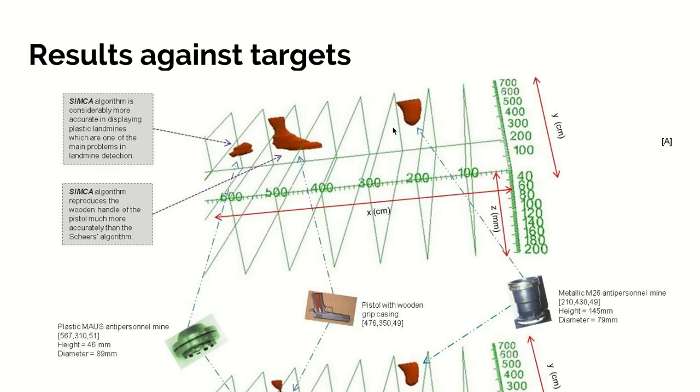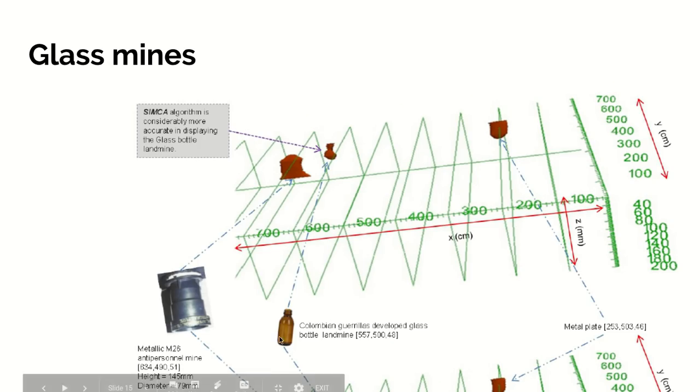Metal anti-personnel mine, the shape is again clearly visible. The large rim at the top appears there. It also works against non-metallic targets. This is a glass landmine developed by Colombian guerrillas, and we're able to pick up the neck and upper part of the landmine very clearly. You can see it clearly represents the shape of it.